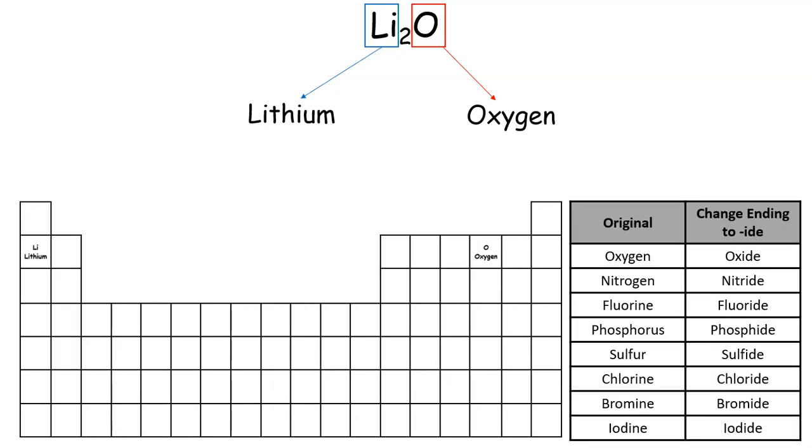The next step is we have to look at the ending of the non-metal. We can't leave oxygen, which is the non-metal, as oxygen. So we come to our list here, and we see that you have iodine should be iodide, bromine should be bromide, all the way up to oxygen, which is oxide. So we have to cross out the ending here and change it to oxide.